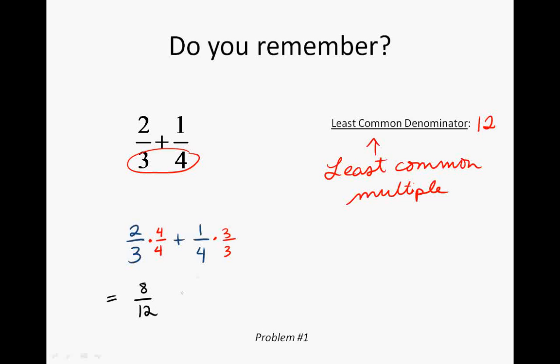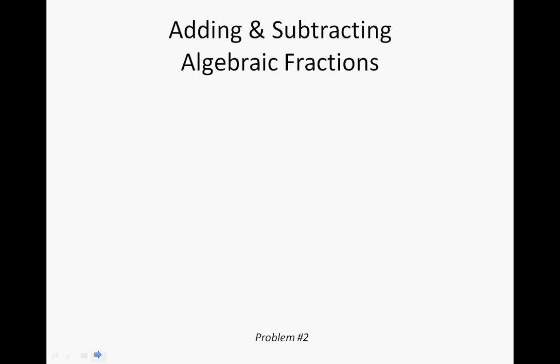Two-thirds times four over four equals eight-twelfths, plus one-fourth times three over three equals three-twelfths. Now we have like denominators. Adding across the numerators: eight plus three is eleven, so the final sum is eleven over twelve. Always check if the final answer simplifies — eleven and twelve have no common factors, so eleven over twelve is the final answer.